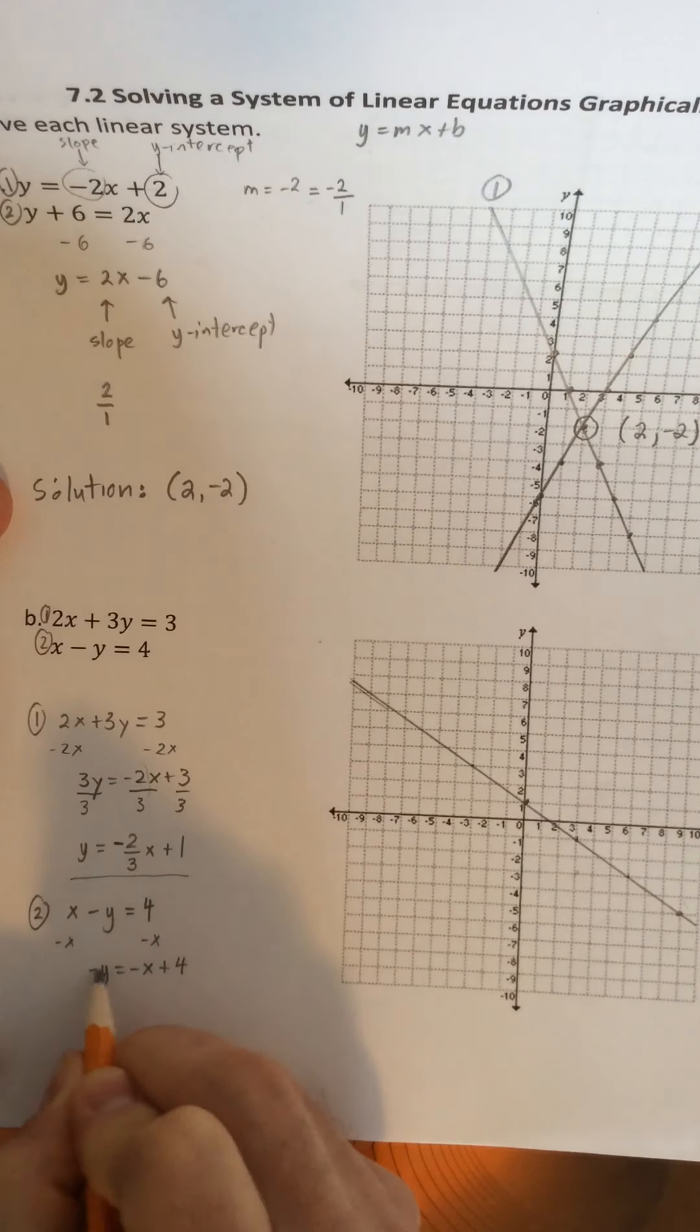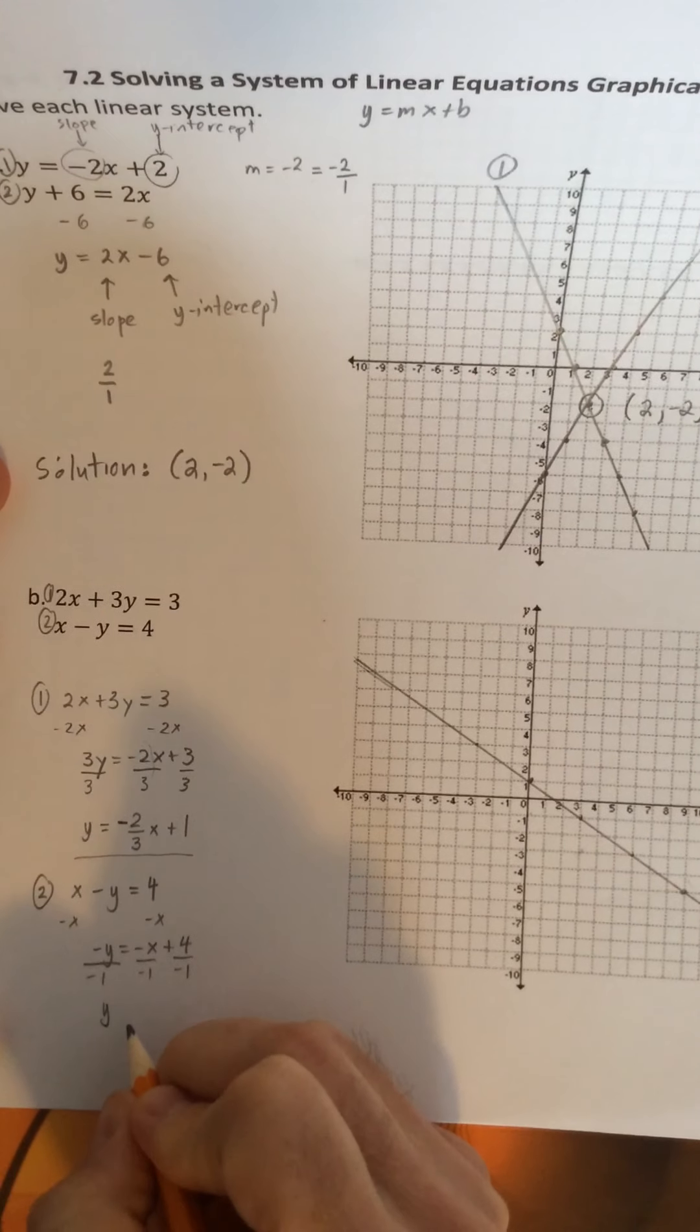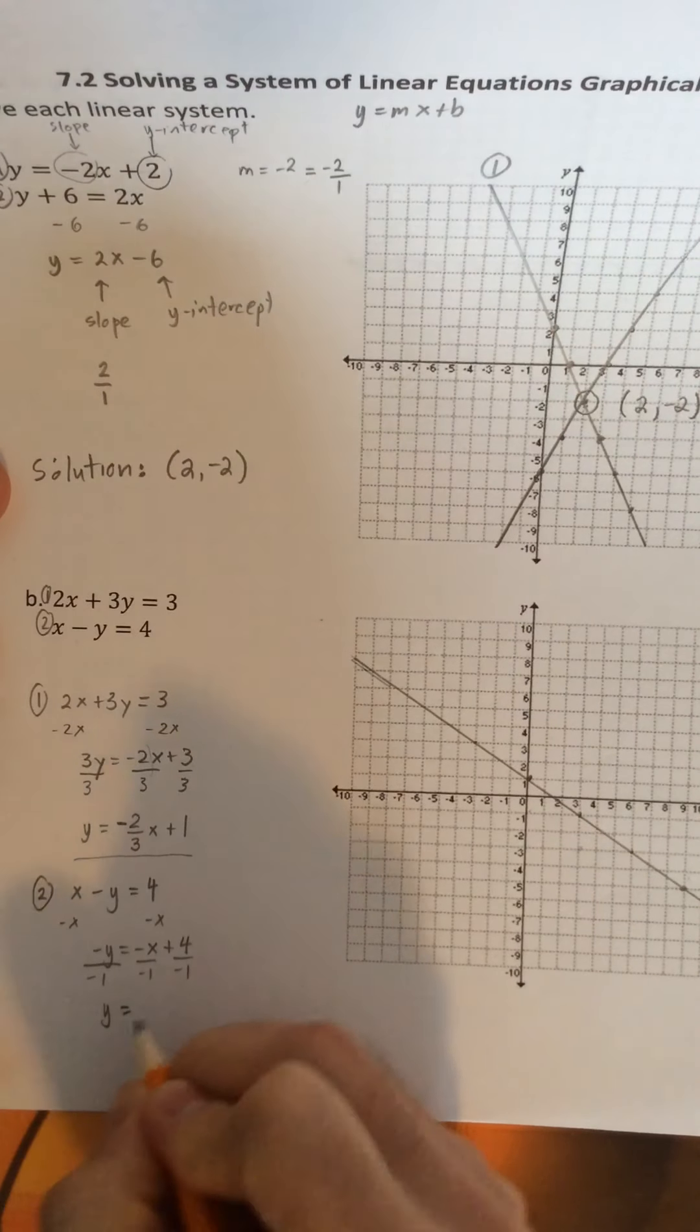Now this isn't y equals. So we need to isolate y by dividing by negative 1. And essentially what this does is it changes the signs of everything in this equation. So this is going to be y equals x minus 4.